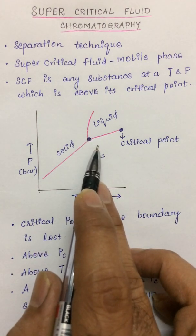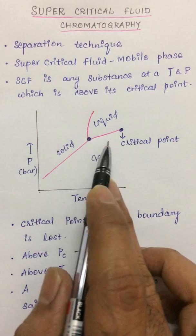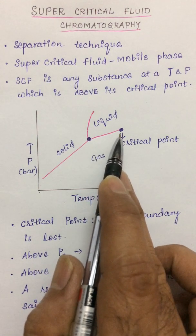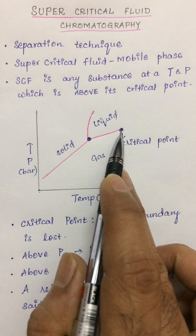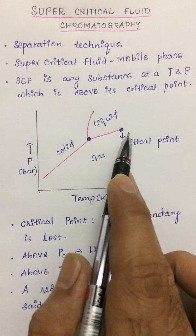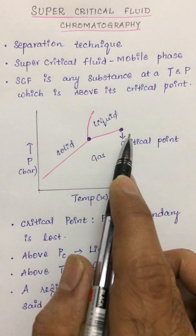Similarly, beyond critical temperature, liquid phase cannot exist, so the compound can exist only as a gas. But above this critical point, that particular compound will neither behave as a liquid nor as a gas. Hence we call it as a supercritical fluid.